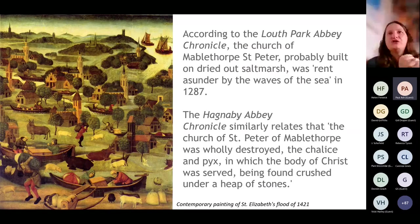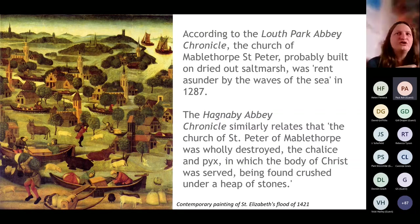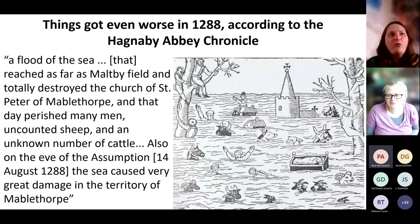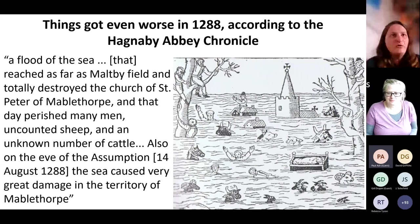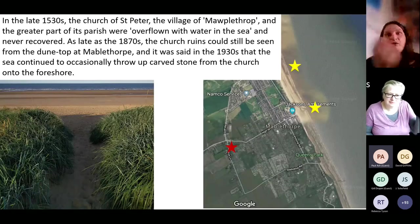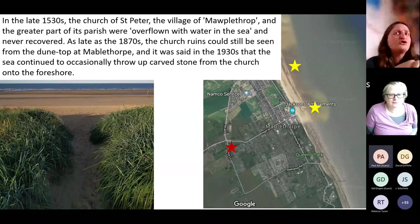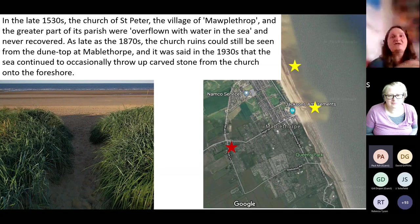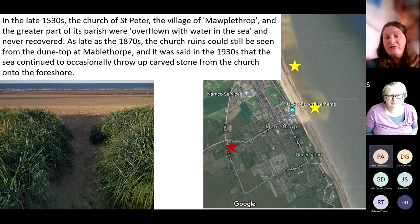At Mablethorpe, the church was rent asunder by the waves of the sea in 1287. The Hagnaby Abbey Chronicle says the church was wholly destroyed. It gets even worse in 1288: a flood of sea reached as far as Maltby Field, totally destroying the church of St Peter of Mablethorpe, and that day perished many men and uncounted sheep and cattle. The church appears to be maybe 500 metres or so offshore of the current coastline, suggesting significant coastal erosion. You could actually see the church ruins at extremely low tides from the dune top at Mablethorpe as late as the 1870s, and metal detector finds from the area support the idea that there was a village out there.